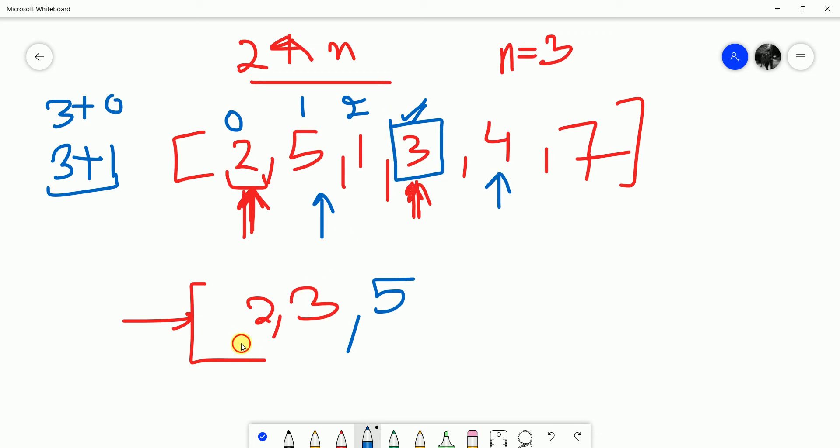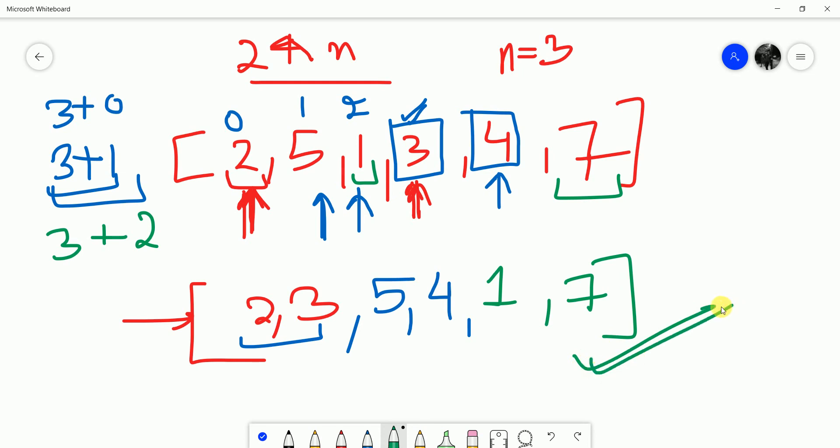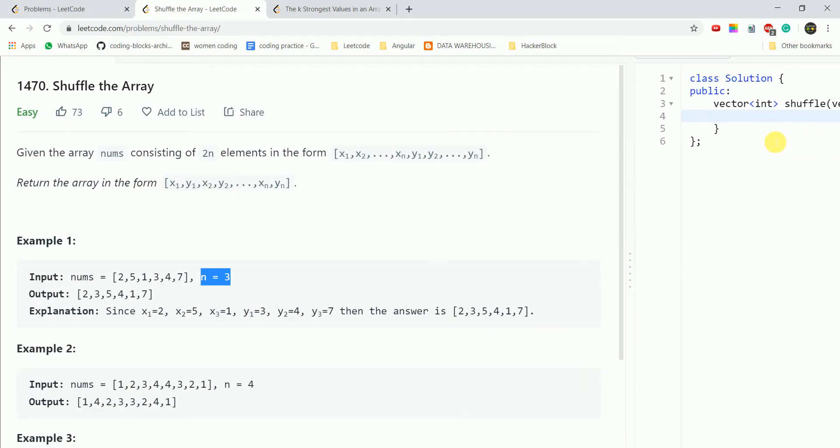Then what we added is ith character that is 5, then we add n plus ith character that is 3 plus 1, so we add 4. Then we increment the value of i to 2, so we'll add first the ith character that is 1, followed by n plus ith character that is 7. So this is the resultant array that we have. This is a very simple question, let's code it.